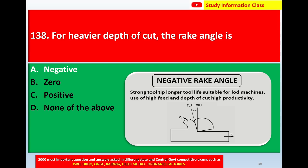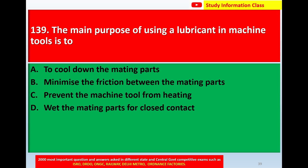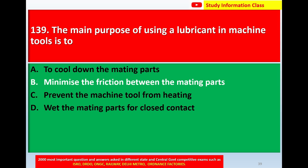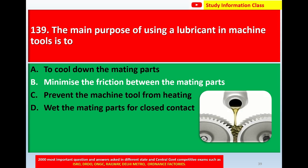Question number 139: The main purpose of using a lubricant in a machine tool is — option A to cool down the mating parts, option B to minimize friction between the mating parts, option C to prevent the machine tool from heating, option D to keep the mating parts in close contact. The correct answer is option B: minimize the friction between the mating parts.